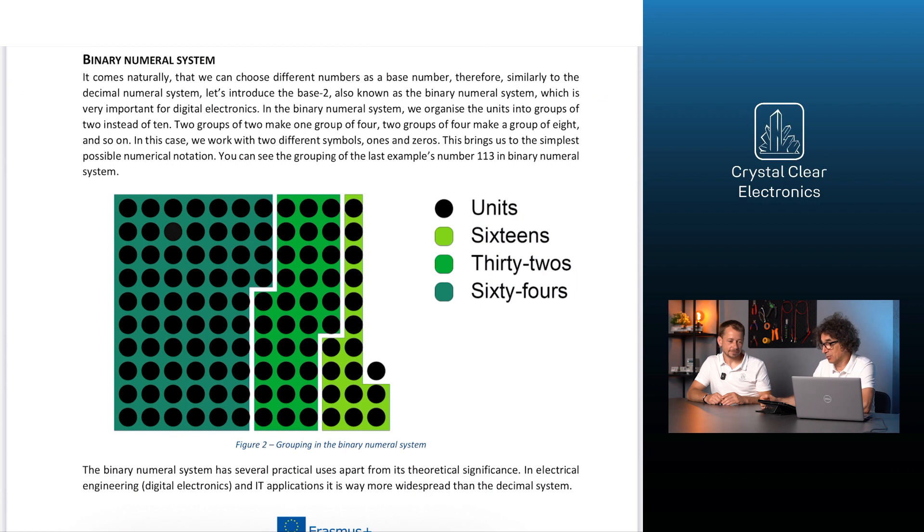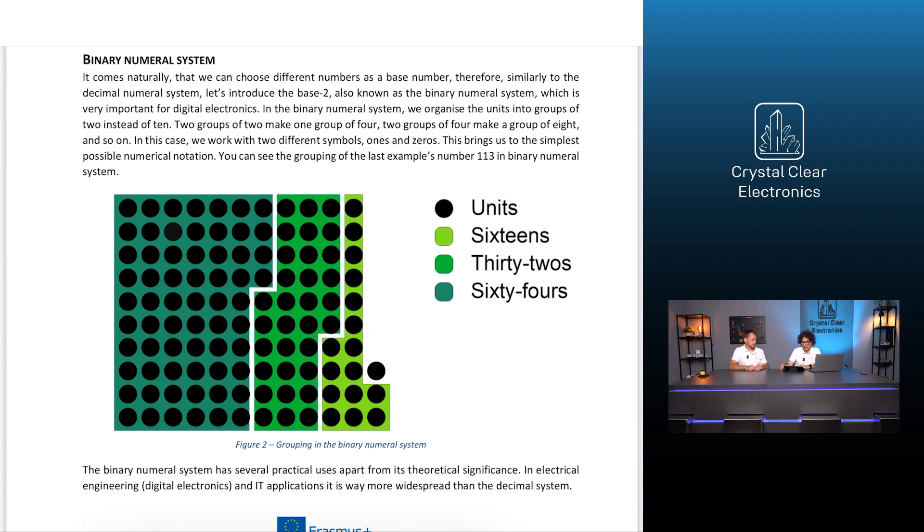But this is the binary numeral system, which is going to appear in the next video. Right, we will take a look there. Understood. It comes naturally that we can choose different numbers as a base number, therefore similarly to the decimal number system, let's introduce the base 2, also known as the binary numerical system, which is very important for digital electronics.